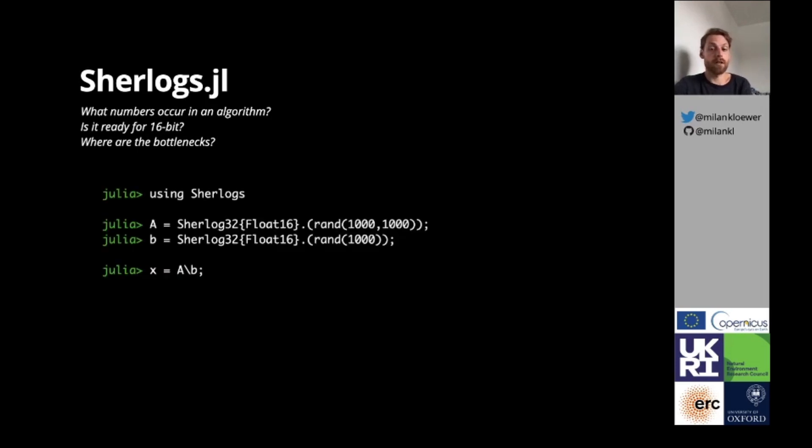Consider solving a linear equation system with LU decomposition of Float16 arithmetic. Now, we wrap the Float16 type into a Sherlock. Sherlock32 behave like Float32, but additionally log the arithmetic result on every operation. The result is a bit-pattern histogram, an array that tells us how often every Float16 number occurred in the algorithm.